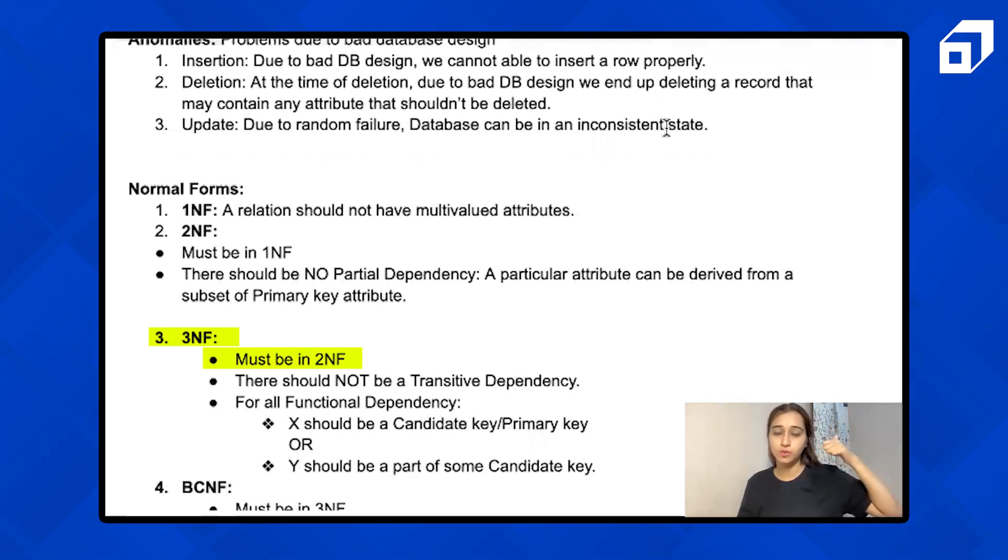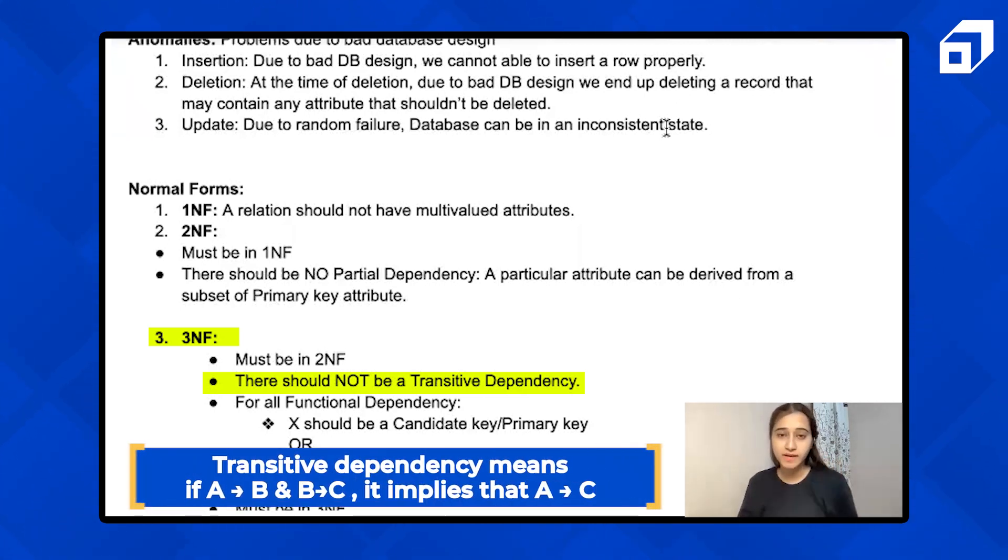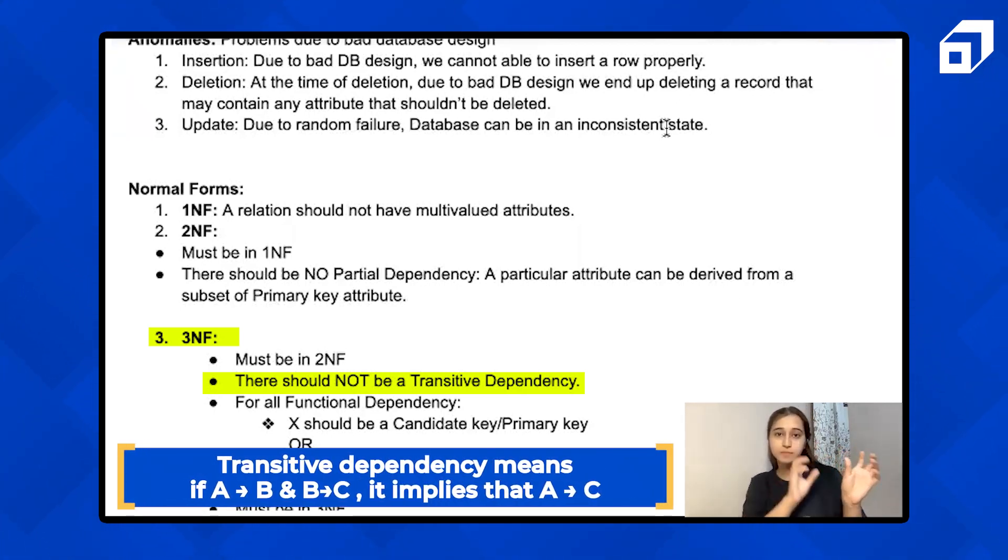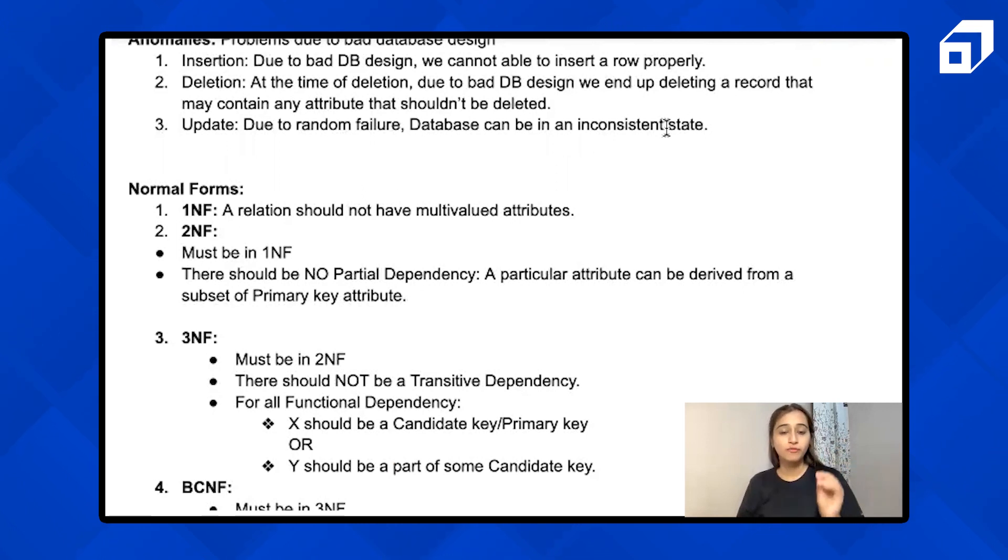Now 3NF. First, it must follow 2NF. Then, there should not be a transitive dependency. Transitive dependency means if A drives B, B drives C, it implies that A drives C. That shouldn't be there. Or, for all functional dependency, X should be a candidate key or a primary key, or Y should be a part of some candidate key. So either of the two conditions is true, then it's in 3NF.